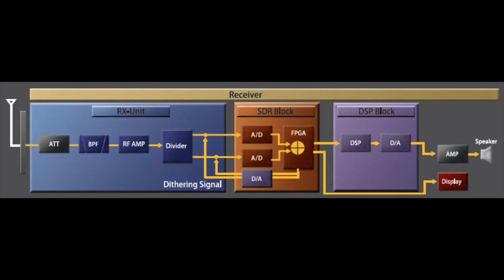The FT-710 is also an SDR receiver, but it's not a hybrid. It uses a bandpass filter ahead of an ADC converter, along with dithering, which improves the intermodulation characteristics of the receiver.